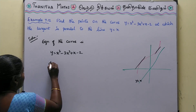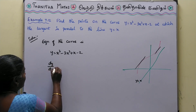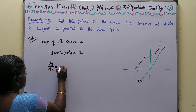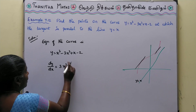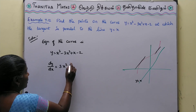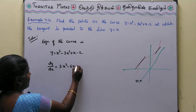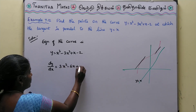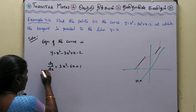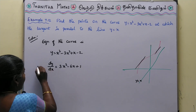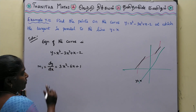Differentiating: y = x³, derivative is 3x²; and 3x² differentiates to 6x. So dy/dx = 3x² - 6x + 1. The constant -2 gives 0. This is the slope of the curve, m1.